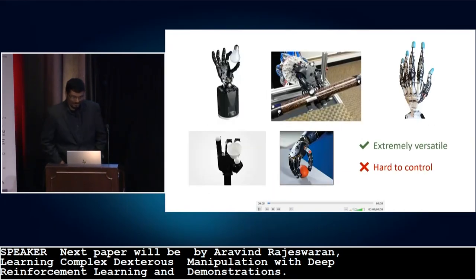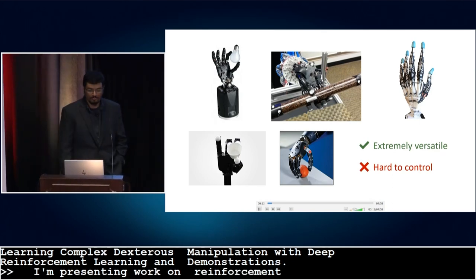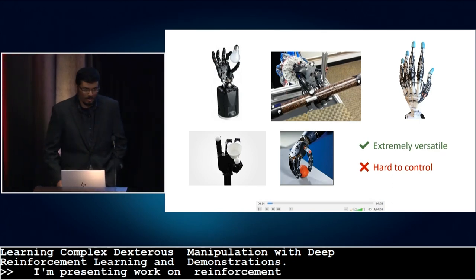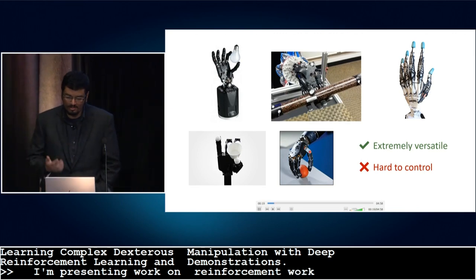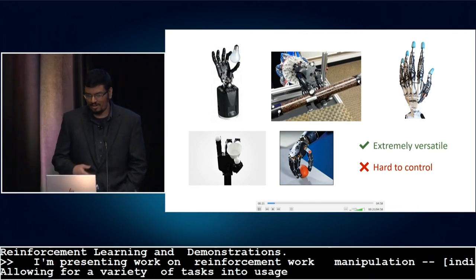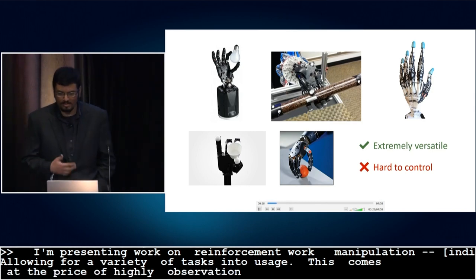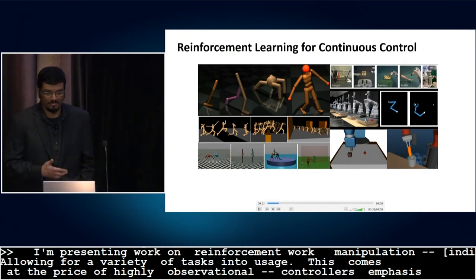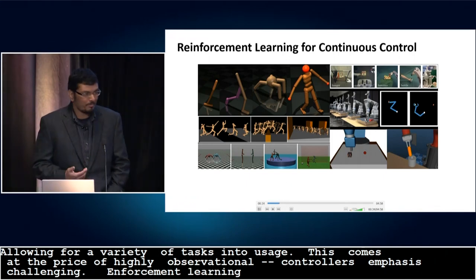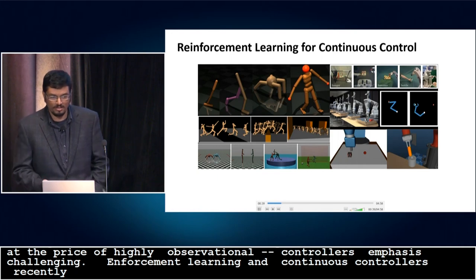Hi everyone. I'm presenting our work on reinforcement learning for dexterous manipulation. Multi-fingered hands are among the most versatile manipulators and allow for a wide variety of interesting tasks, including in-hand manipulation and tool usage. However, this versatility comes at the price of high-dimensional observation and action spaces and complex contact patterns, which makes modeling and subsequent controller synthesis particularly challenging. Reinforcement learning provides a generic and model-agnostic approach to synthesize controllers. Recently, deep RL has demonstrated impressive results on a variety of locomotion and whole-arm manipulation tasks, predominantly in simulation.